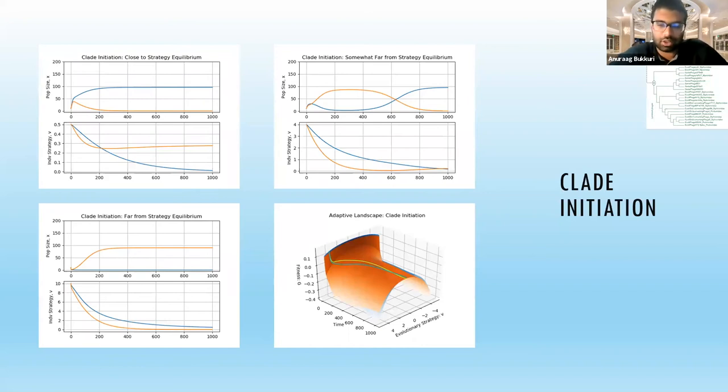We also have this adaptive landscape. It says, given my population, my competitor strategy and population at some time, what would my fitness be if I chose to play X strategy? As you can see, these adaptive landscapes, unlike classical static adaptive landscapes, are dynamic over time. The big thing to note is for now we just have a single peak in our adaptive landscape.